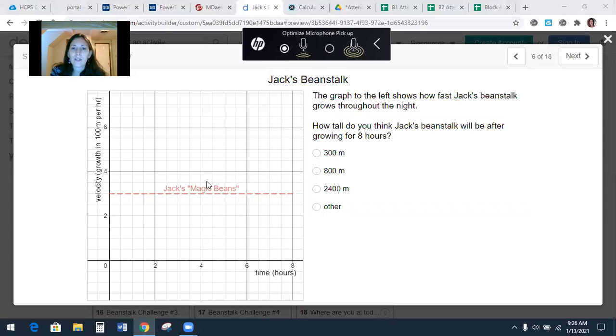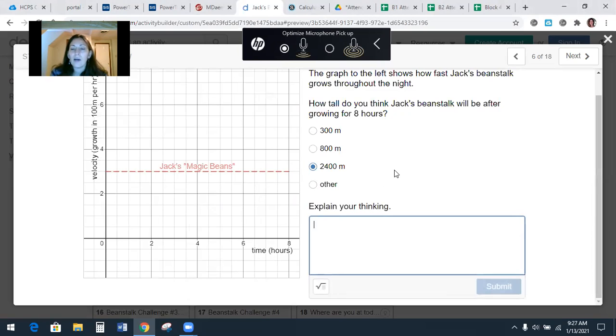So the graph to the left shows how fast the beanstalk grows throughout the night. How tall do you think it's going to get after growing for eight hours? So it grows for eight hours. And they labeled this now. It's growing at 300 because this is in 100 meters per hour. If it grows eight hours at 300 meters per hour, how tall is it going to be? So 300 meters per hour, it grows for eight hours. Good. Why? Like how come? Yeah, well, it's got to reach up to the cloud where the giant is, right? So Jack can go out there. How do we get 2,400? Because that is going to be the right answer. Yeah, you multiply them together for eight hours times 300 meters per hour.